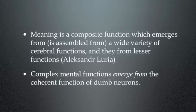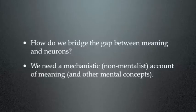So in order to give meaning to meaning, we have to look at it as a composite function which emerges from, and by that I mean is assembled from, a wide variety of cerebral functions, and each of them in turn is assembled from lesser functions. And this, of course, is the model of mind put forward by the great Russian neuropsychologist Alexander Luria. He had a very, very interesting history, but unfortunately we can't go into that. Just have a look at him in Wikipedia, fascinating life. And his approach was modular. Complex mental functions emerge from the coherent function interaction of dumb neurons. The neurons themselves are stupid. They've got no brains. But together they form the brain, and out of that complex mess comes the mental properties that we want to explain.